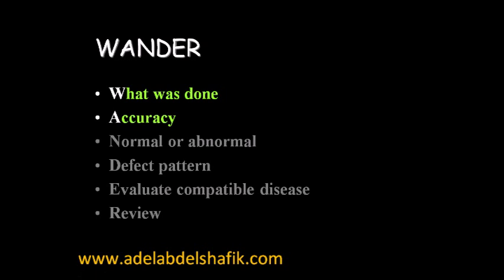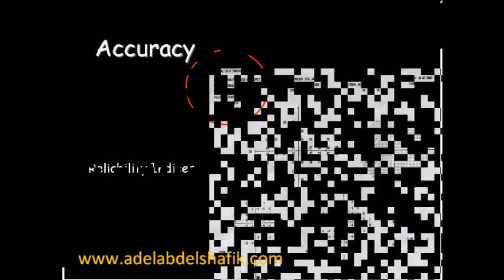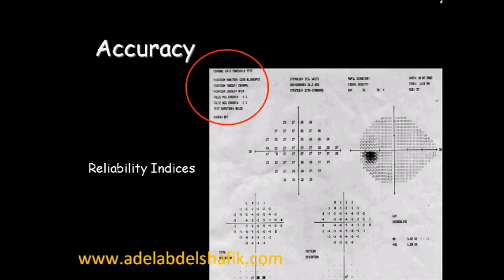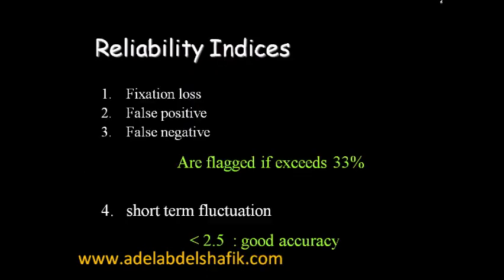The second point in WONDER is the A — the accuracy of the things being done. If we check this part of the printout, we will see the reliability indices: is the test reliable or not? We get three points: fixation losses, false positive, and false negative. Any of these points should be less than one-third.